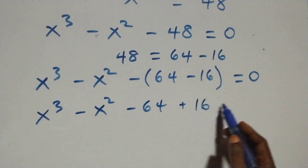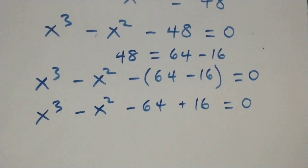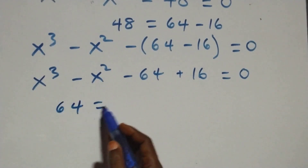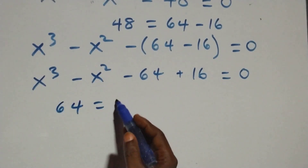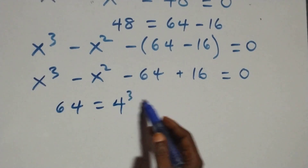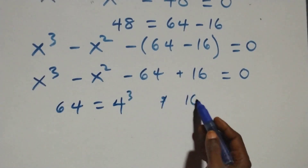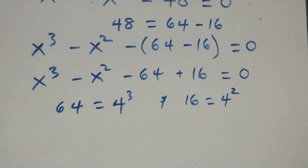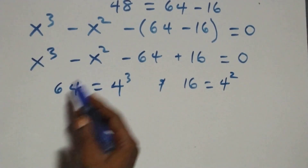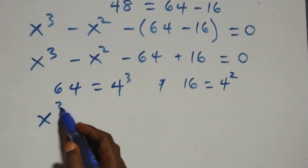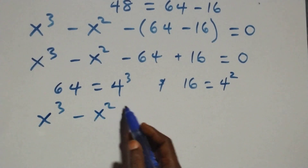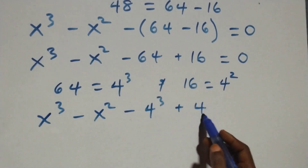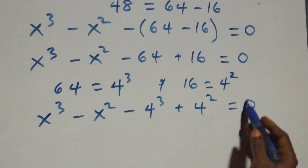The next step: we can express 64 as 4 times 4 times 4, that's 4 raised to the power 3. So this equation becomes x raised to the power 3 minus x raised to the power 2 minus 4 raised to the power 3 plus 4 raised to the power 2, equals to 0.